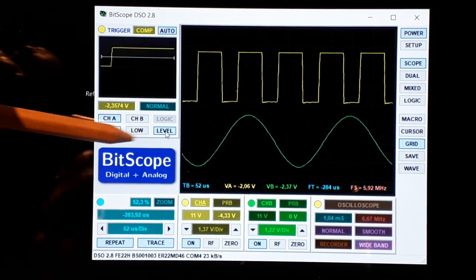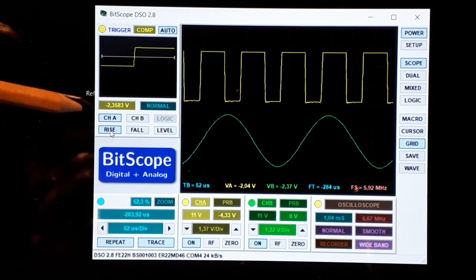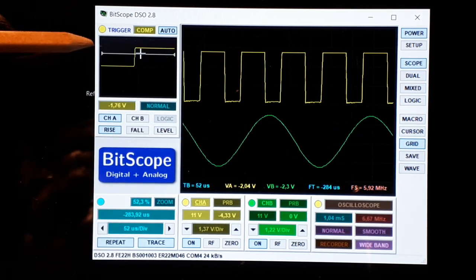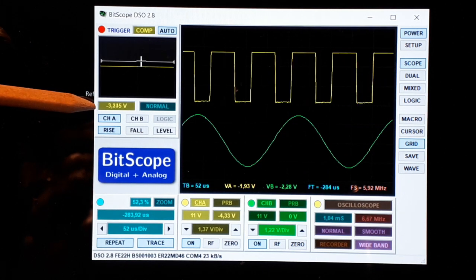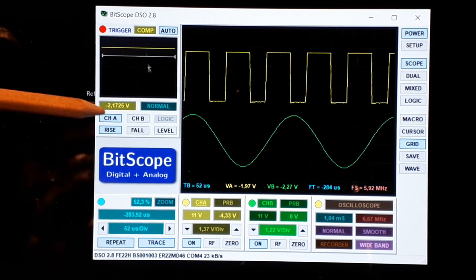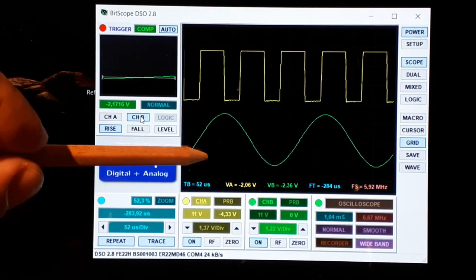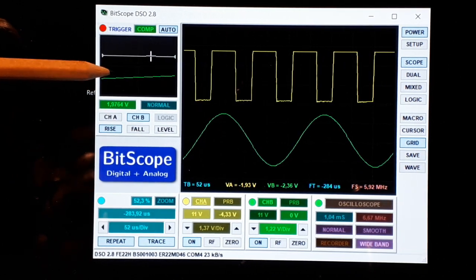Or you could use levels like high or low level. But if we use the rise one, we could change the level here. And if we change like channel B, we have here.